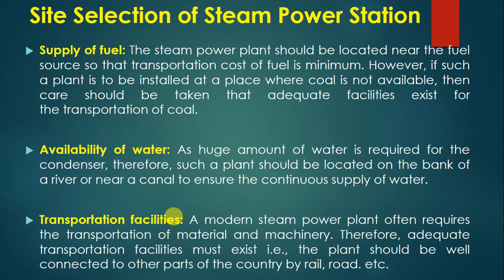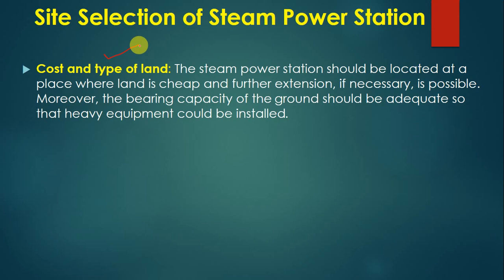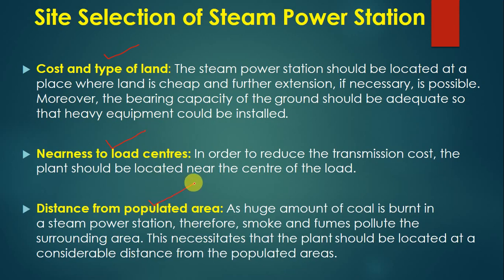Site selection for a thermal power plant involves several criteria: supply of fuel — choosing a place with an ample amount of fuel available; availability of water; transportation facilities; cost and type of land — selecting land where cost is low; nearness to the load center; and distance from populated areas, meaning the site should be away from cities. These are the key parameters to consider when selecting a site for a thermal power plant.